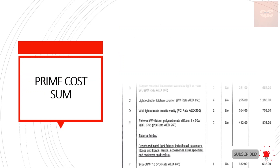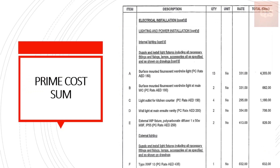Here is an example — these are the lights, and it is separately mentioned what their prime cost rates are. For example, a surface mounted fluorescent and wardrobe light has a prime cost rate of 180 dirhams mentioned during the tender stage. The contractor has priced the total as 331 dirhams, so out of the 331 dirhams, 180 dirhams is for material supply and the remaining is for installation.